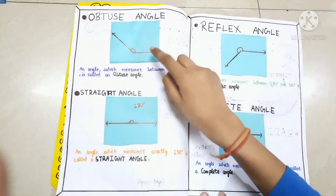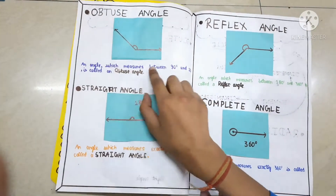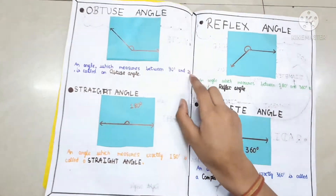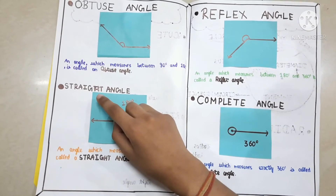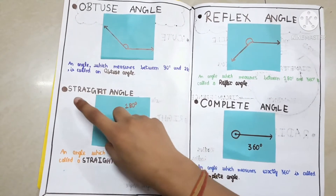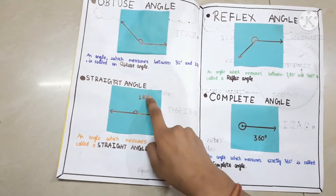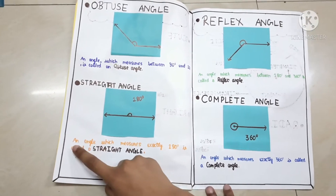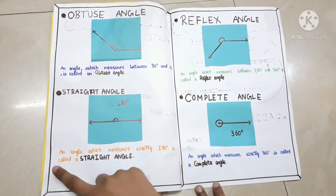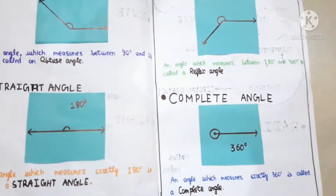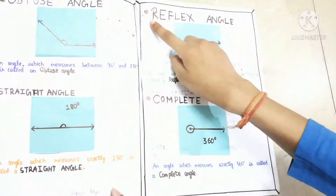Obtuse angle: this is obtuse angle. An angle which measures between 90 degrees and 180 degrees is called an obtuse angle. Straight angle: this is straight angle. An angle which measures exactly 180 degrees is called a straight angle.